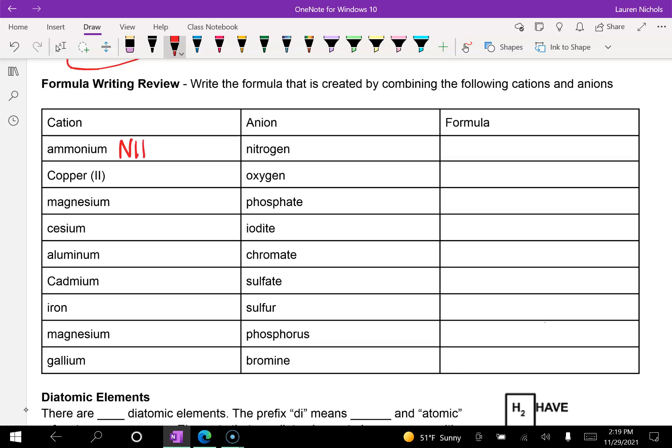For example, ammonium, which you'll find on the back of your periodic table, is NH4 with a positive one charge. Nitrogen is a capital N, and we know that because it's in column 15, it has a negative three charge. Now, in order to balance out our positive and negative, we're going to actually need three ammoniums. So that we have positive one, positive one, and positive one is positive three, which balances out a negative three.